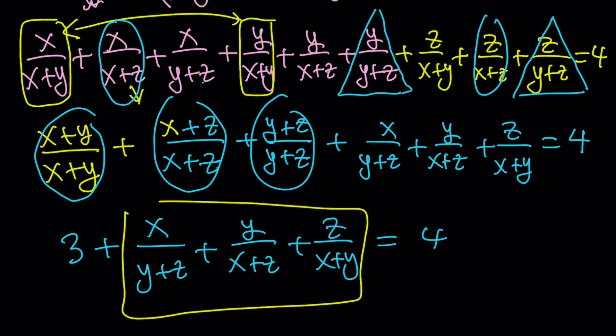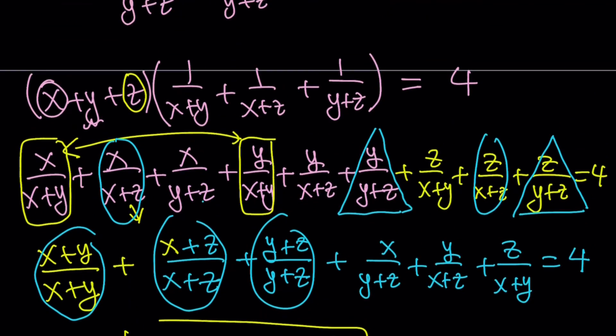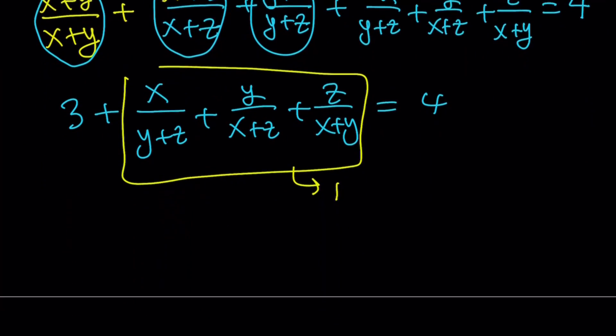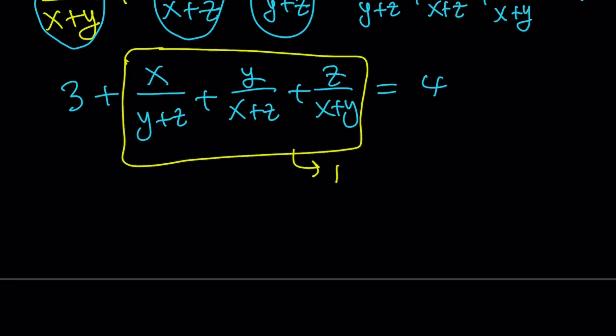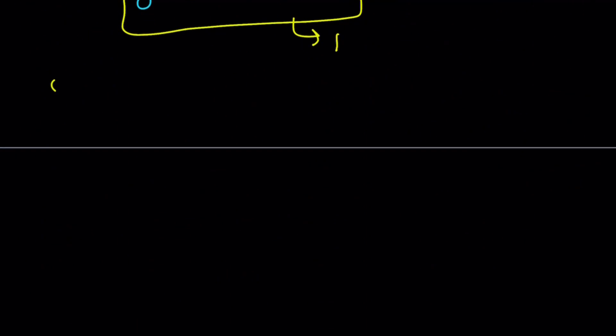So this is equal to 1. And what are we looking for? We're looking for exactly that. So the answer is 1. This brings us to the end of the first method. Let's go ahead and talk about the second method.